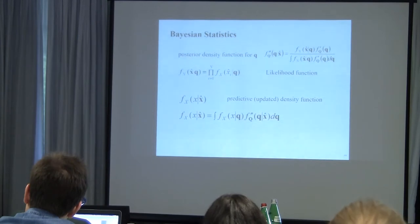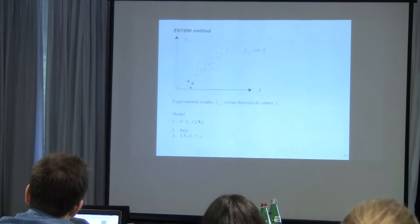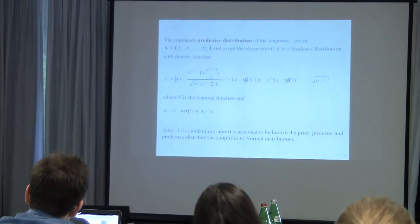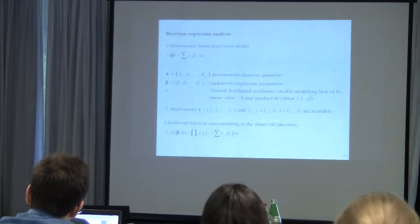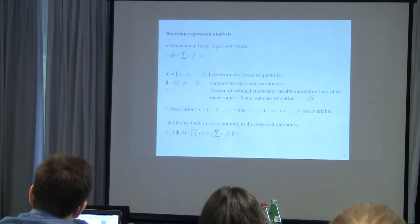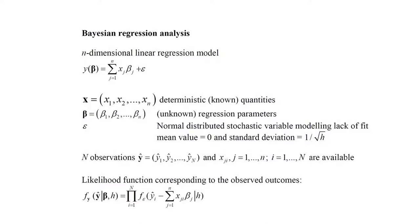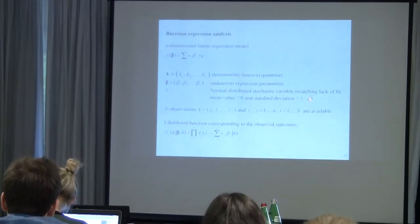The same procedure is now used for Bayesian regression analysis. We assume a linear model where some parameters x are known, some regression parameters beta are unknown, and an uncertainty term epsilon is added — assumed normally distributed with mean zero and standard deviation equal to one divided by the square root of h. The unknown parameters are the regression parameters beta and the parameter h.